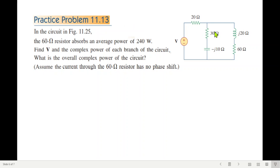Now practice problem 11.13. This is the circuit given. The only information given is that the 60 ohm resistor absorbs an average power of 240. So from, we know the power absorbed. Therefore we can find this current. And from this current, we can find the voltage across this. It will be same voltage across here. So from there, we'll find the second current or the current in this branch. And then we can find the total current. We need to find the voltage V and the complex power of each branch of the circuit. So this is the first part.